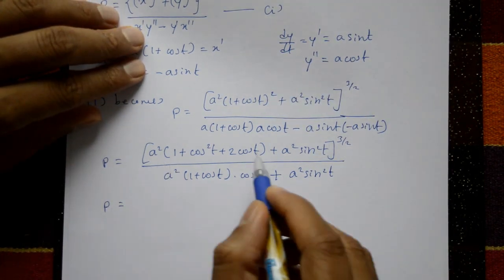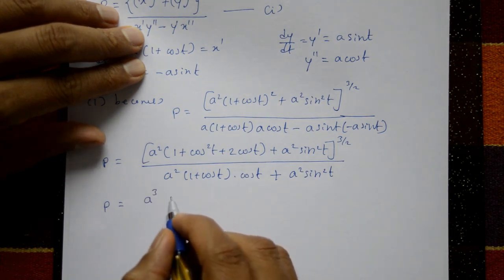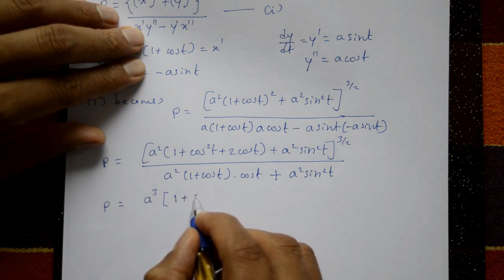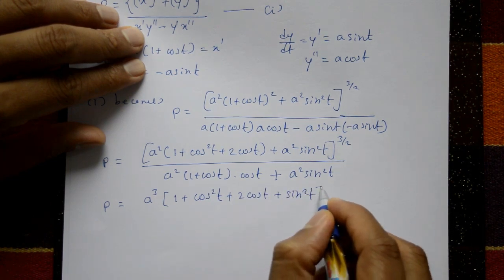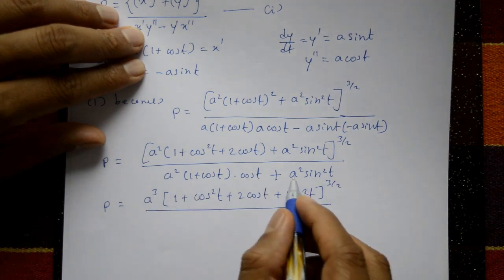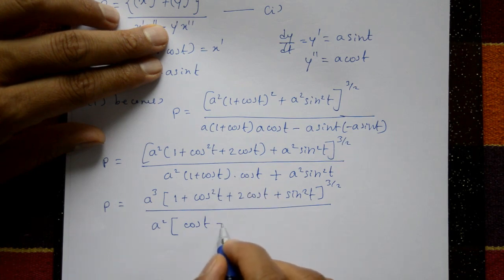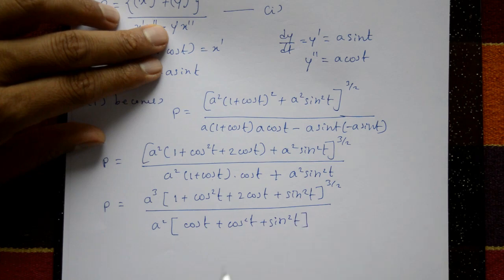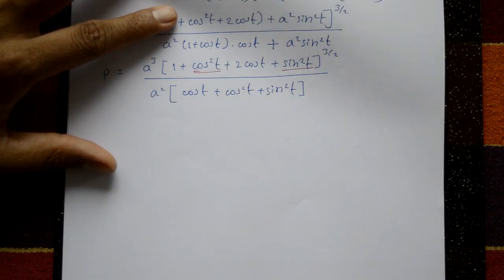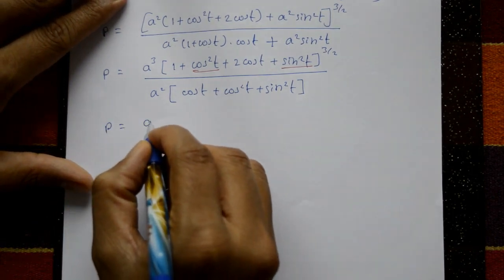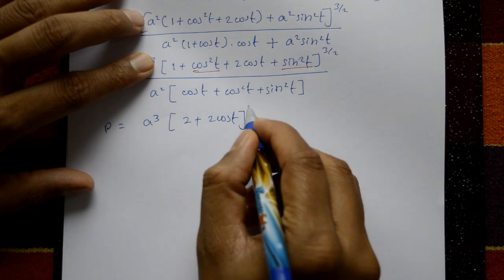Expanding the numerator: a²(1 + cos t)² + a²·sin²t = a²(1 + 2cos t + cos²t + sin²t) = a²(2 + 2cos t). Taking a² outside: the whole expression becomes a³·(2 + 2cos t)^(3/2). For the denominator, cos²t + sin²t = 1, so it becomes a²·(1 + cos t).